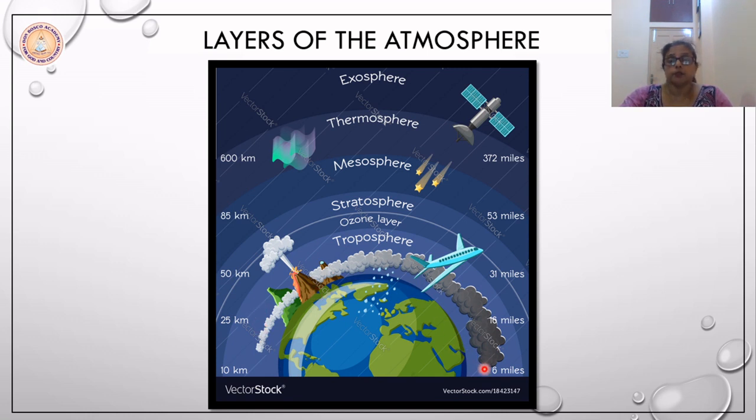The atmosphere is divided into five distinct layers, namely the troposphere, the stratosphere, the mesosphere, the thermosphere, and the exosphere, which actually gets itself lost into space. So today, we will now learn about the troposphere.